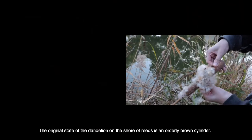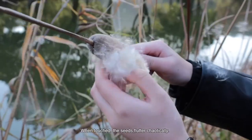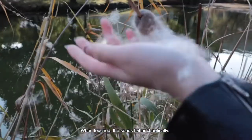The original state of dandelion on the shore of weeds is an ordinary brown cylinder. When touched, the seeds flutter chaotically.